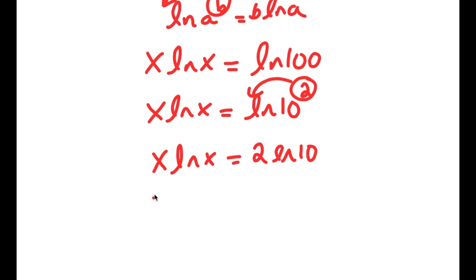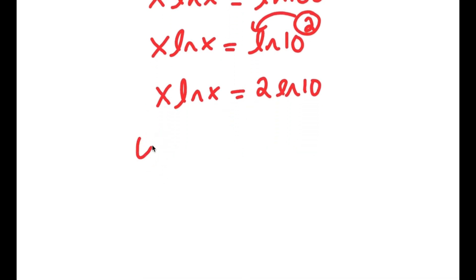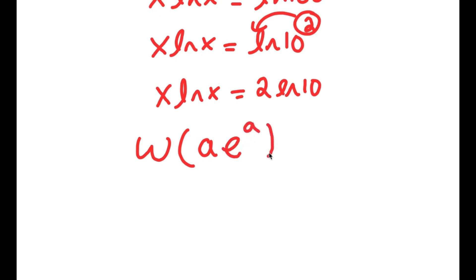There's something called the Lambert W function. If I take the Lambert W function of something in the form a times e to the power of a, this is going to equal a. So if there's something in the form a times e to the power of a, the Lambert W function returns a.